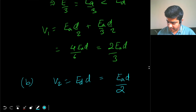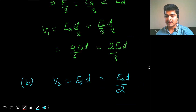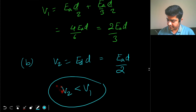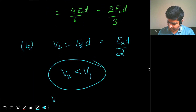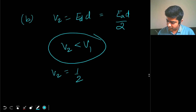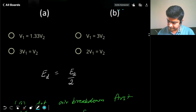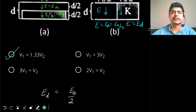Comparing the two: V2 is less than V1. Specifically, V2 = E_A·D / 2, and since V1 = 2·E_A·D / 3, we get V2 = (3/4)·V1 = 0.75·V1. Conversely, V1 = 1.33·V2.